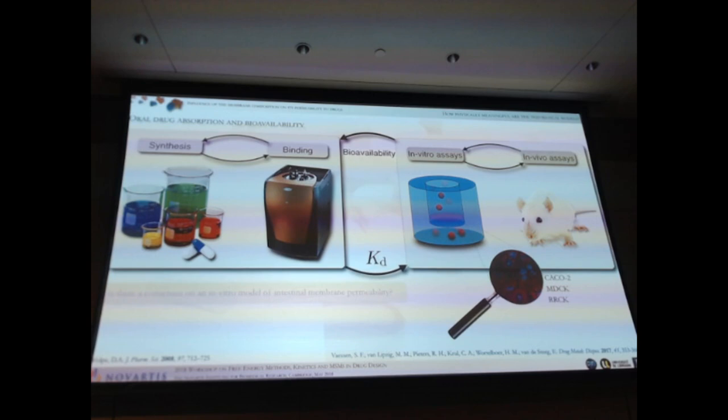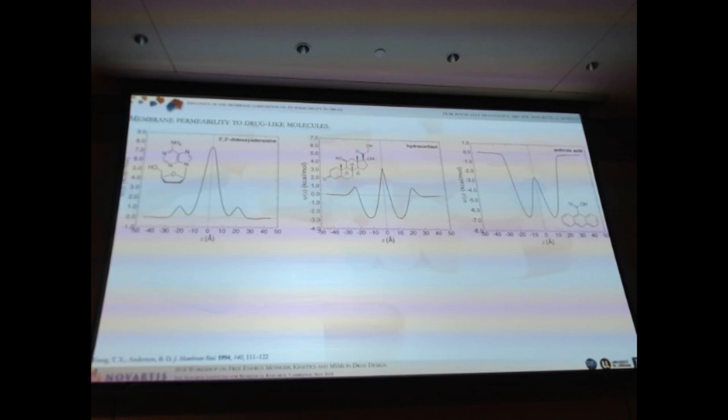For protein ligand binding, it's rather clear what the experimental observable should be as a basis of comparison with theory. I mean, we can compare with data coming from ITC and it's less clear for membrane permeability. I mean, every company has its own favorite cell line. Some use CACO2, some use MDCK, some use RCK, some use PEMPA. And there's even not an agreement between in vitro assays and in vivo assays. I mean, sometimes they disagree blatantly. So it's a relevant question to ask. What should be the basis of comparison for our calculations?